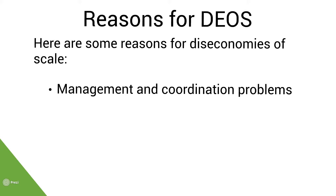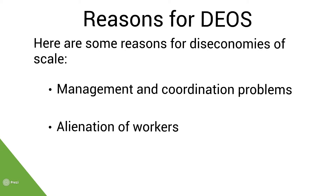Another example of diseconomies of scale is the alienation of workers, especially where there is a large amount of specialisation and division of labour. Workers will be doing the same types of job and may become bored and disengaged. Workers also like to feel they are making a difference and that they are valued, which is easier to achieve in a small to medium-sized company compared with a much larger one.